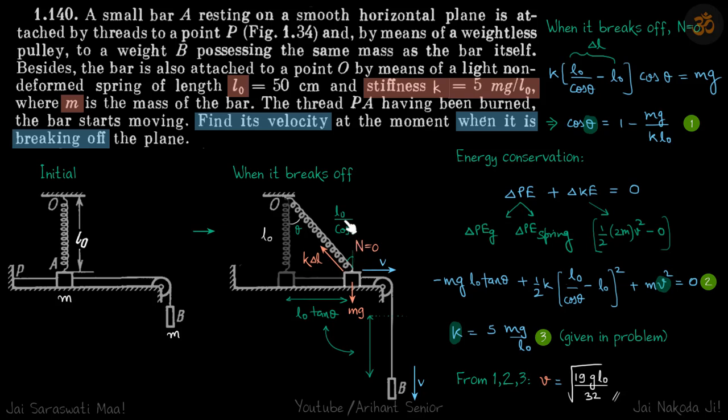When that happens, we need to find the velocity of the block. Let's assume the velocity to be v. When it is breaking off, we know that normal reaction is zero, so net forces perpendicular to the plane direction must be balanced.